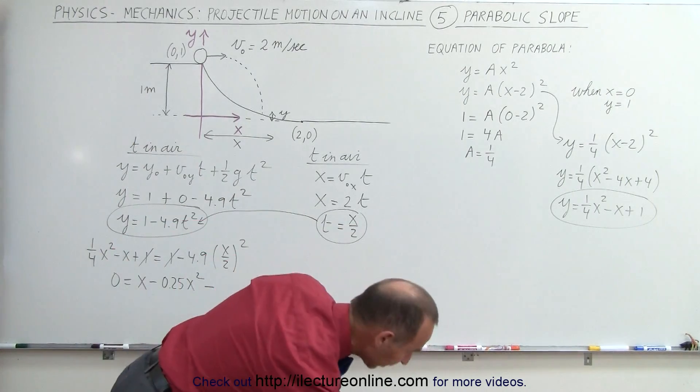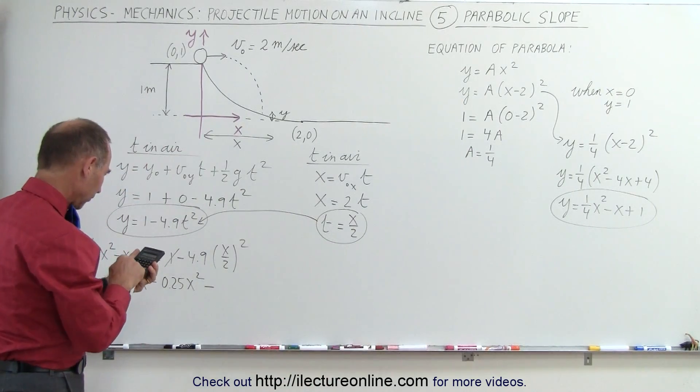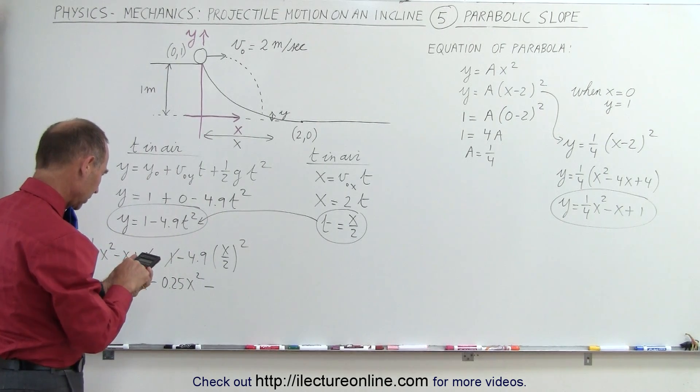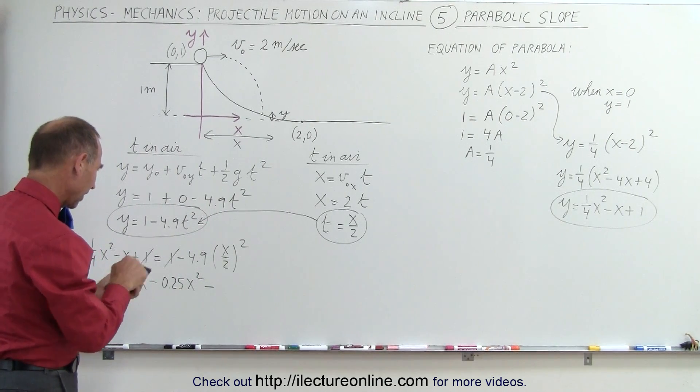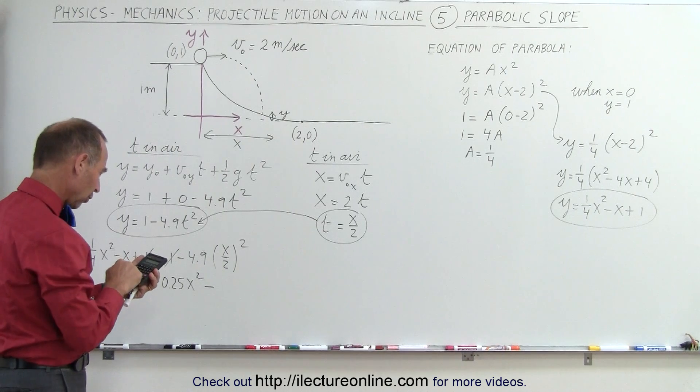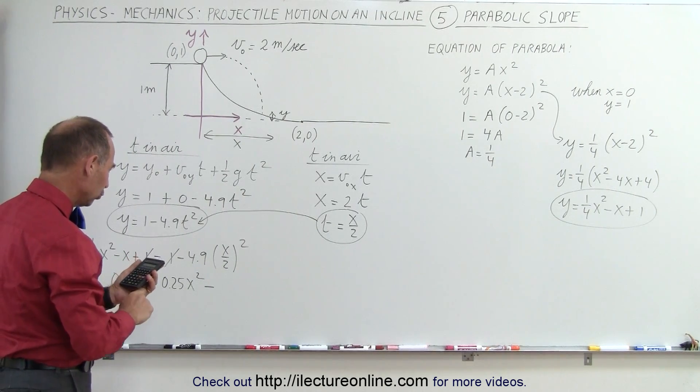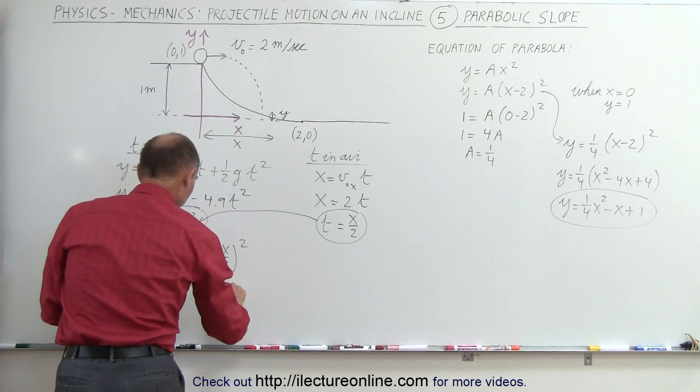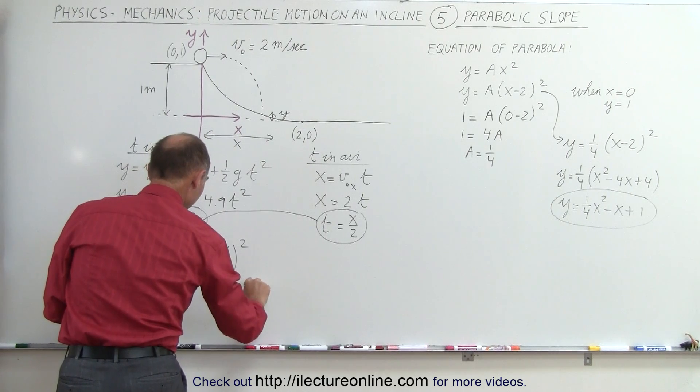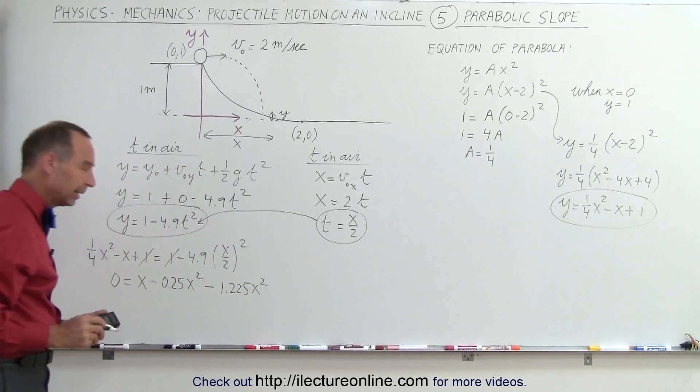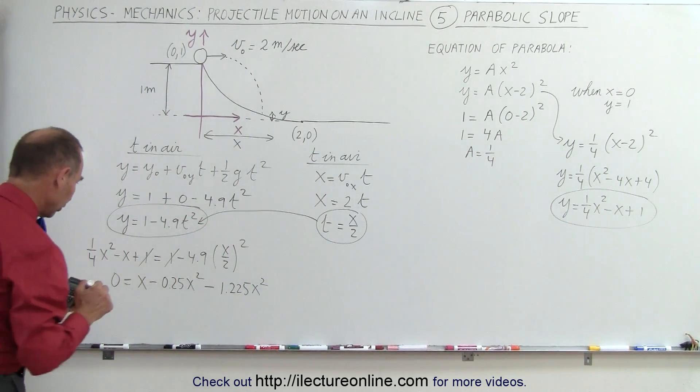and I need a quick calculator for that. So we have 4.9 divided by 2 squared, which is 4. Gives us 1.225 and negative 1.225x squared. Combining those two x squared terms,